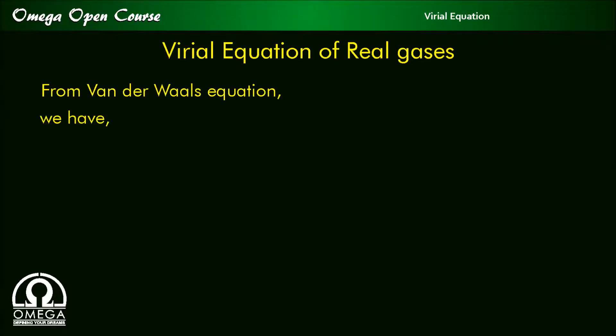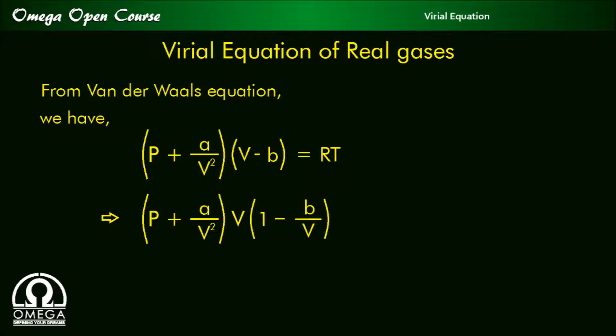From Van der Waals equation of real gases, we have p plus a by v square into v minus b is equal to RT, which implies p plus a by v square into v into 1 minus b by v.